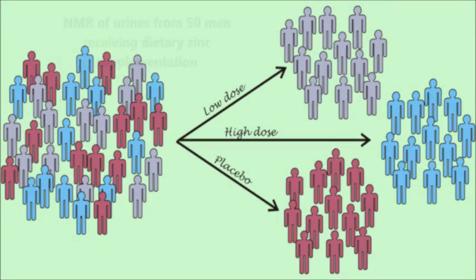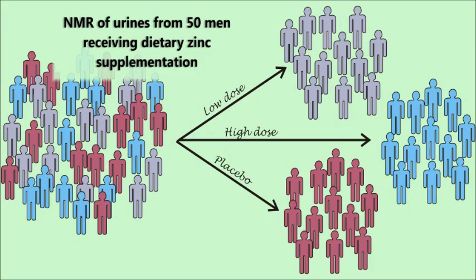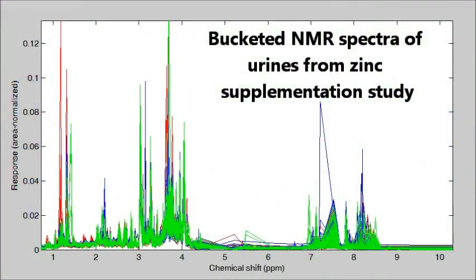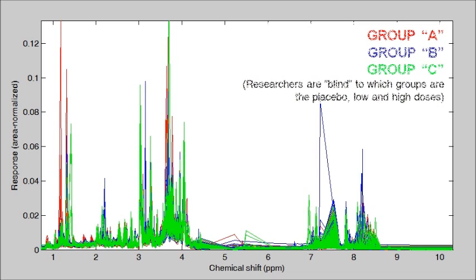A common aim in many studies is to look for systematic differences between two or more groups of data. For example, these spectra are acquired from three groups of volunteers, each receiving different amounts of dietary zinc supplementation. We would like to know if these levels have led to systematic changes in the metabolite profiles.